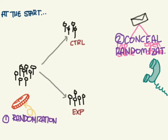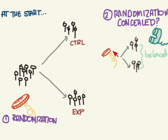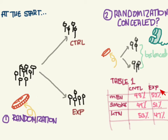What you want to do is conceal the entire randomization process. Probably the best way is to have an off-site randomization person you call, and they tell you what to do. After randomization, both the control and experimental groups should have about the same number of men, smokers, women, elderly, young, and diabetics. The way you check for this is to look at Table 1 in these studies and make sure they're about the same in each group.